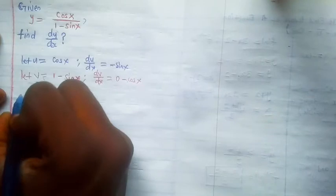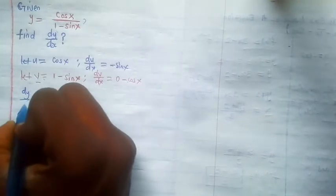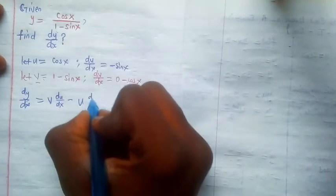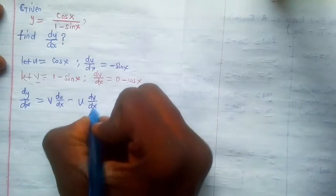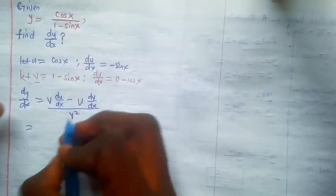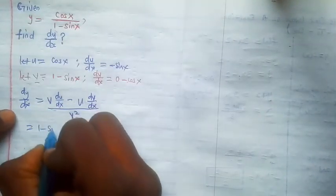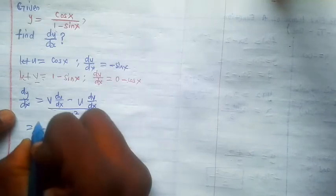We're going to be using the quotient rule to find the value of dy/dx. From quotient rule, we take note that dy/dx is equal to v du/dx minus u dv/dx, divided by v squared.